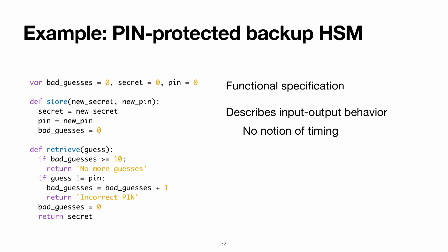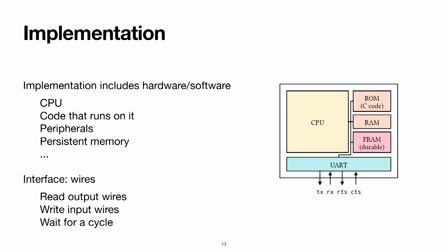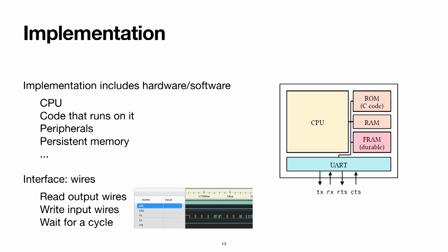The spec has no notion of timing. At the implementation level things are much more complicated: we have a CPU, code running on top of it, peripheral devices, various kinds of memory for code storage, heap memory, persistence, and external pins. The interface looks quite different — it's really four wires sticking out of the device, and the interface is very low-level: timing diagrams of logic levels on those wires at various points in time as the clock ticks.